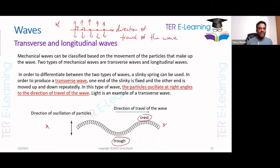In a transverse wave, the particles are oscillating at right angles to the direction of propagation of the wave. You're getting two marks just for saying that.